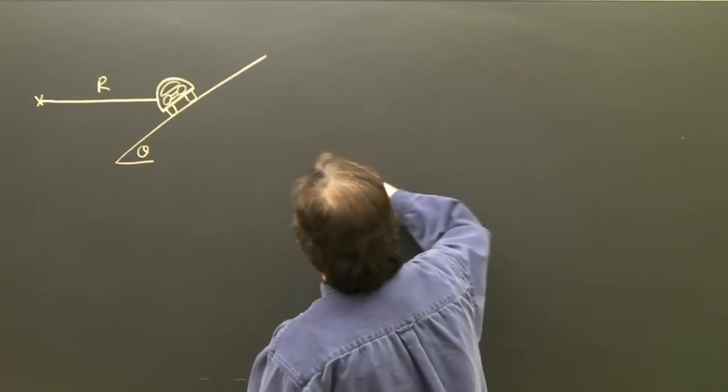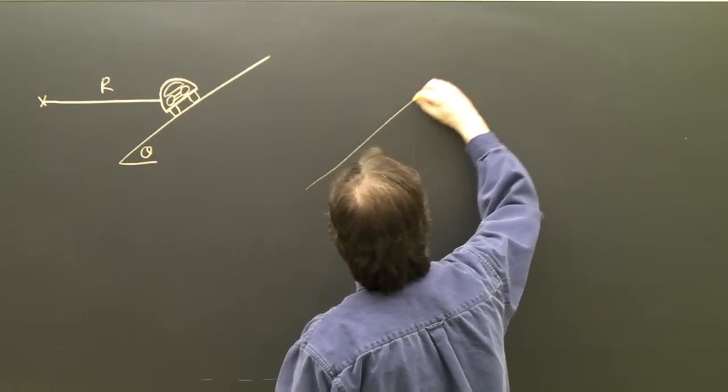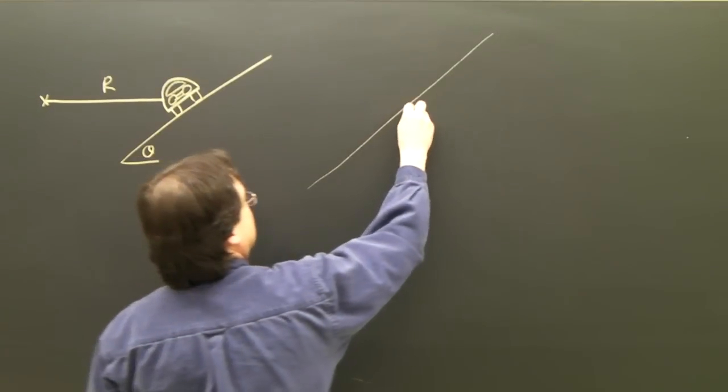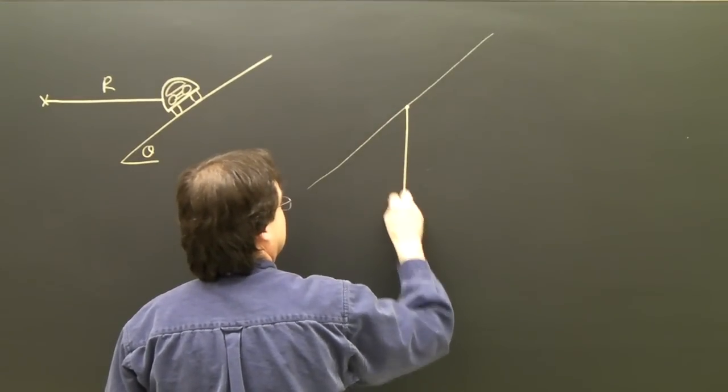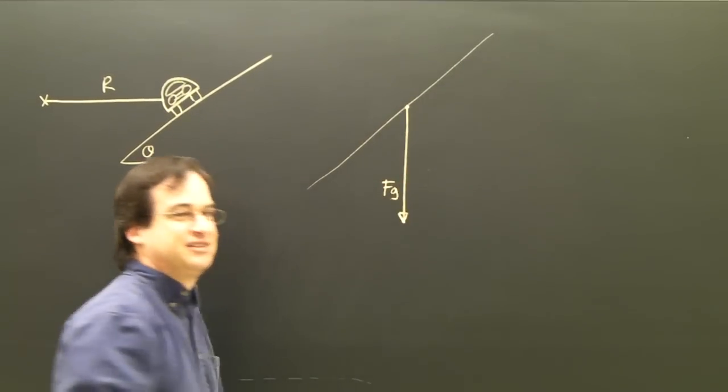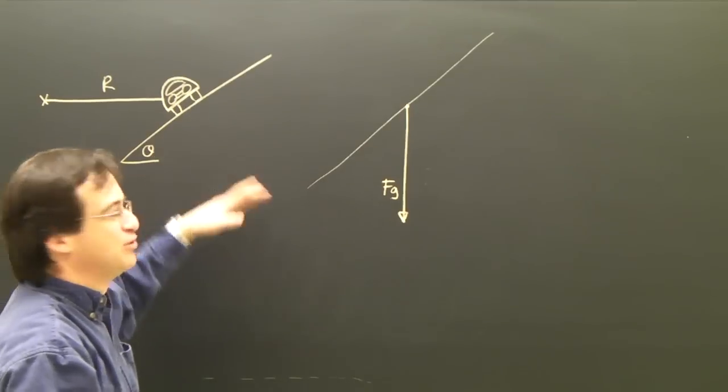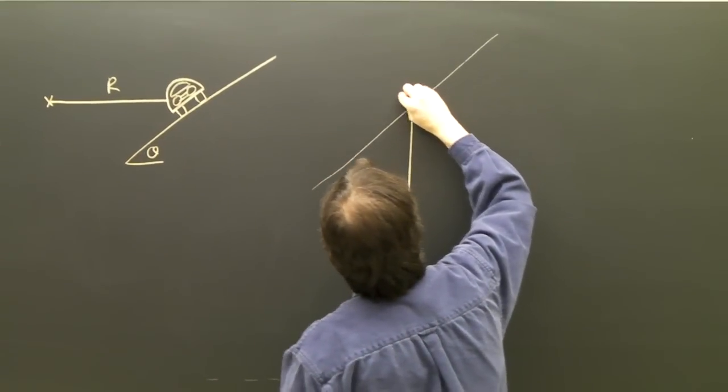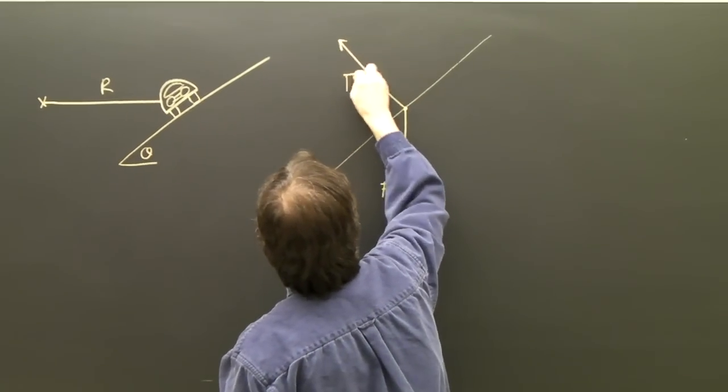So let me draw my line for the road. And I'm going to draw my free body diagram. Is there gravity? Yes there is. Is it sitting on a surface? It's sitting on a road surface so we have at 90 degrees, we have the normal.